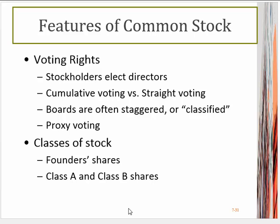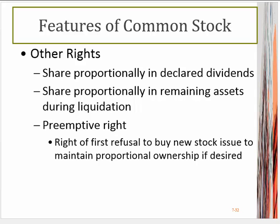You have other rights as a common stockholder. One is the right to your share of dividends. You get your share of any assets during liquidation, and since you get declared dividends, you're entitled to the profits of the company — that's your money. The preemptive right says you have the right of first refusal to buy new stock if it's issued, so that you can maintain your proportional ownership in the company and not lose control. Of course, you have to have money to buy the stock, so if you don't, you could still ultimately lose your controlling interest.